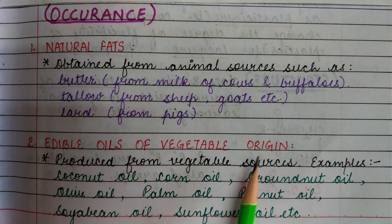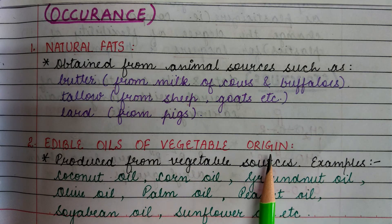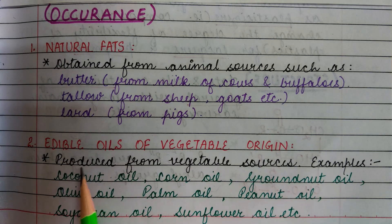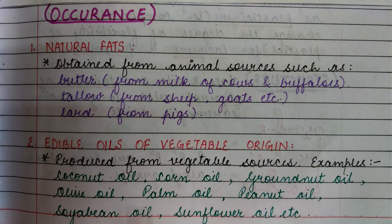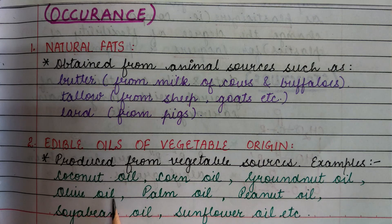Second are edible oils of vegetable origin. These are produced from vegetable sources, for example: coconut oil, corn oil, groundnut oil, olive oil, palm oil, peanut oil, soya bean oil, and sunflower oil.